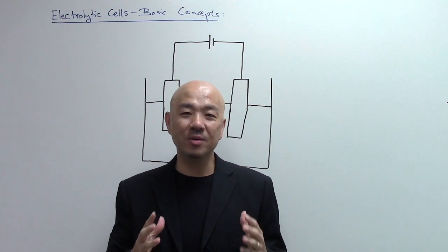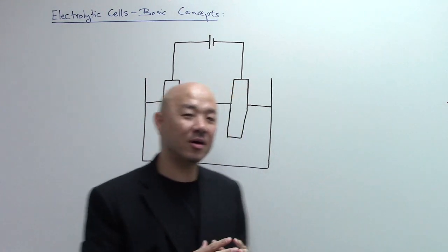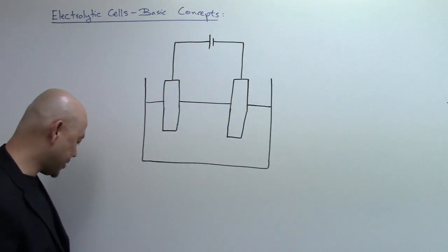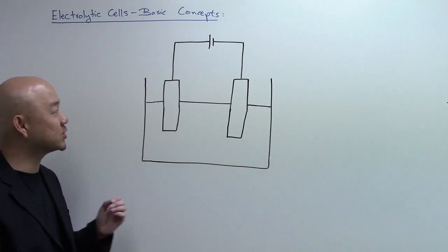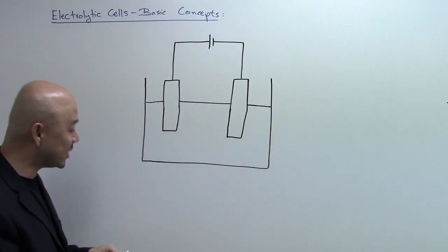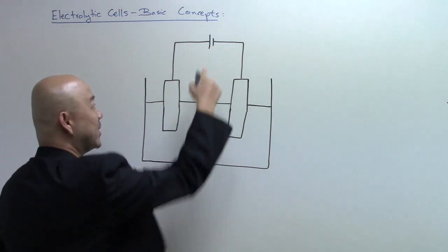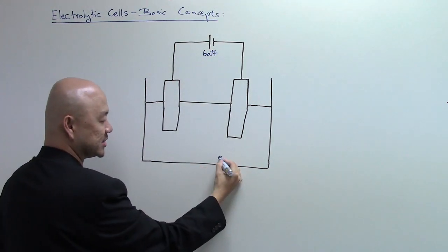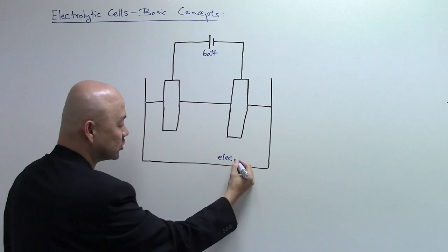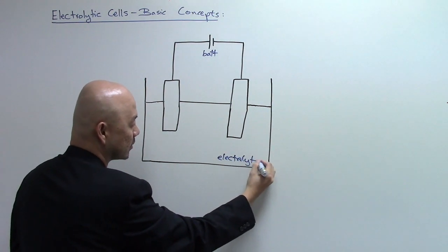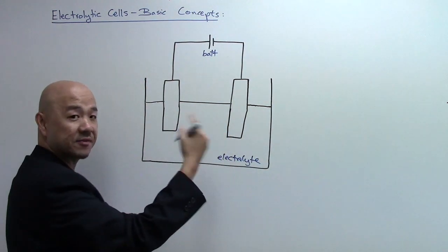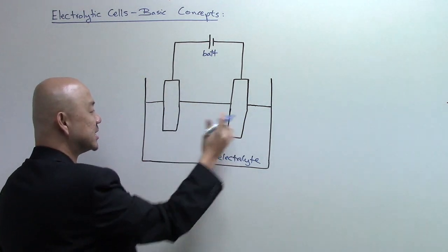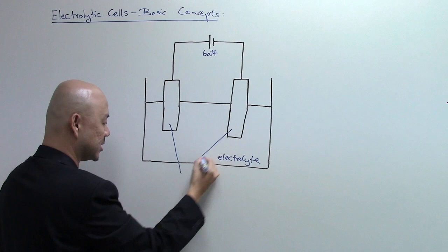Let's take a look at the board — here is a basic diagram of an electrolytic cell. There are three components required: the battery, which is shown here; the electrolyte; and two solid surfaces for electron transfer in terms of redox reaction, which are known as electrodes.